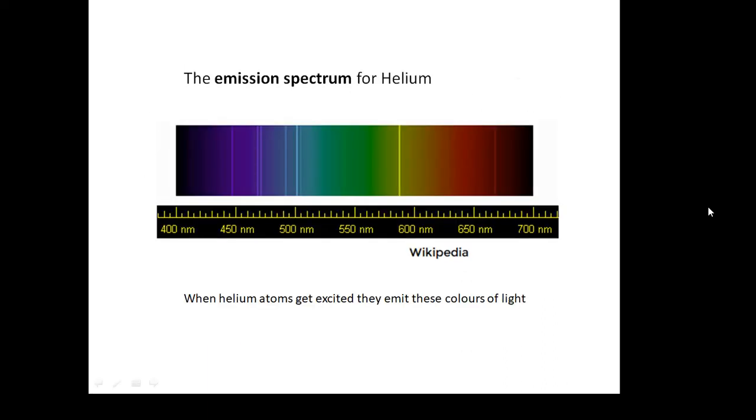For example, this is what we call the emission spectrum for helium. This is basically the colours of light that helium atoms give off when they get excited. And all helium atoms give off the same colours. This is the emission spectrum for helium.